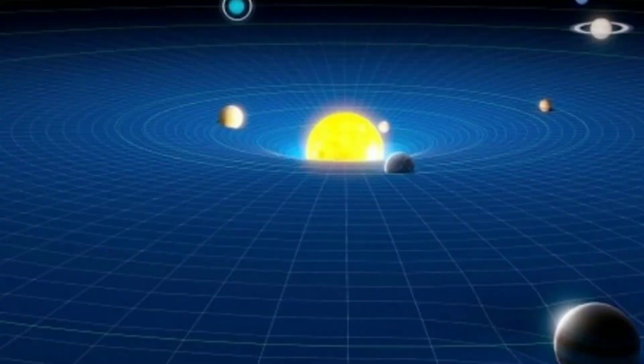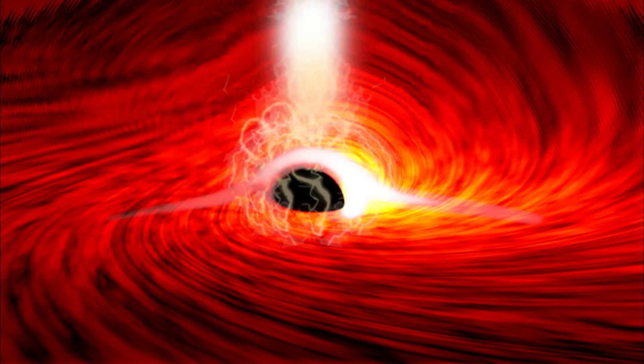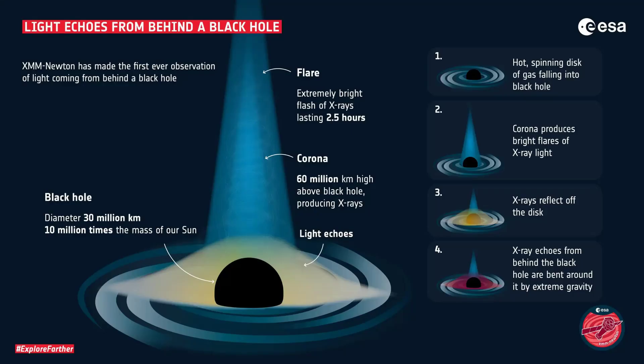The general theory of relativity builds upon the special theory of relativity by incorporating the effects of gravity. According to this theory, gravity is not a force that acts between objects, but rather a curvature of spacetime caused by the presence of mass and energy. This curvature causes objects to follow a curved path through spacetime, which we perceive as the force of gravity.